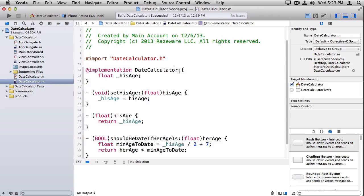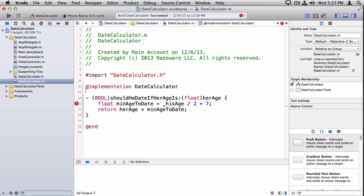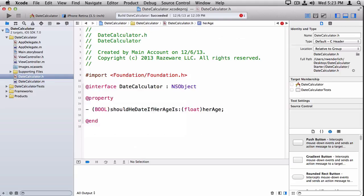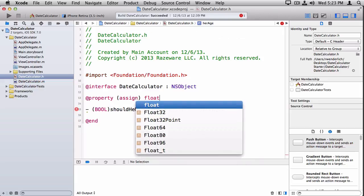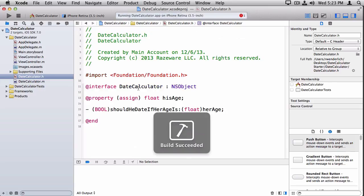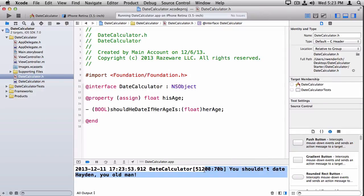Delete it from the .h, delete it from the .m. And to replace it, I just had to add one line, the property, and I'm going to put the property keyword. I'm going to say this is an assign because it's not an object, so we say the type is float and it's his age. And all that code we wrote manually is now automatically done by the compiler. So just to prove it, I'm going to run, and I get the output just as before.